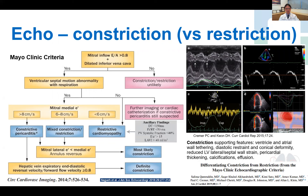We'll spend a little bit of time on pericardial constriction, which is shown on the screen. The Mayo Clinic criteria was published in 2014, and helps to distinguish constrictive from restrictive heart disease. Firstly, we expect constriction patients to have a dilated IVC with minimal collapse, followed by a respirophasic ventricular septal shift, and then higher than expected medial E' velocity, which is very specific for constrictive pericarditis.